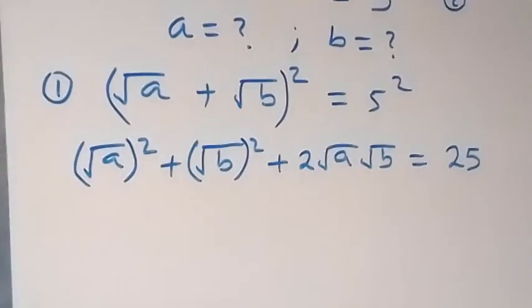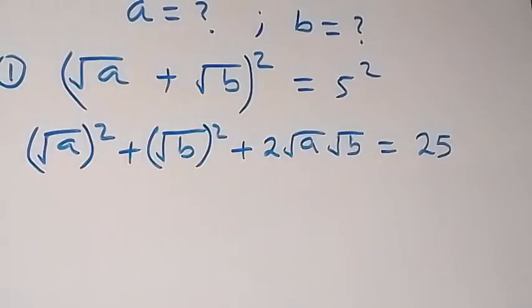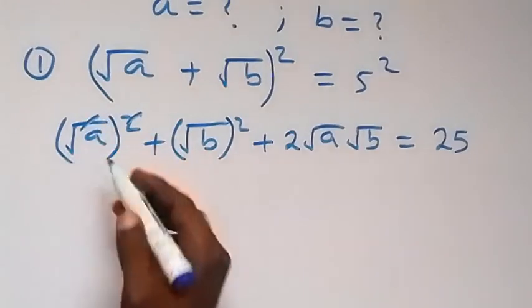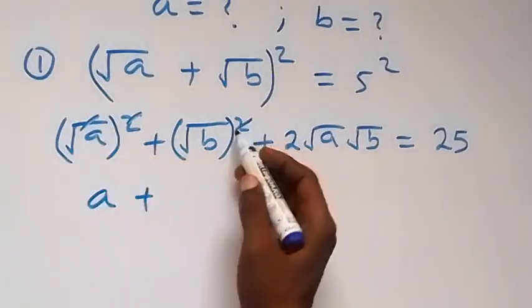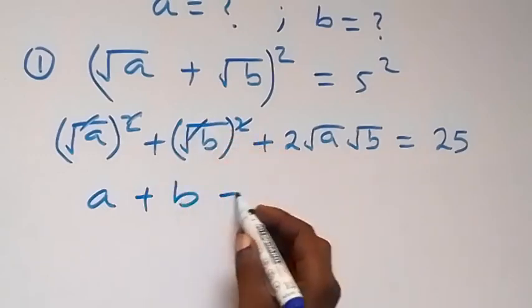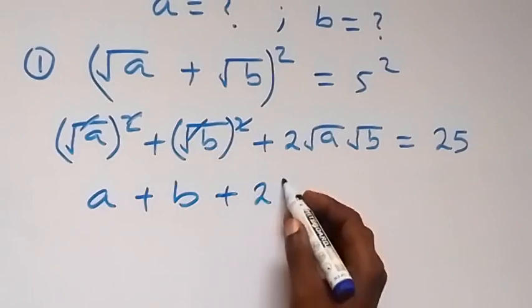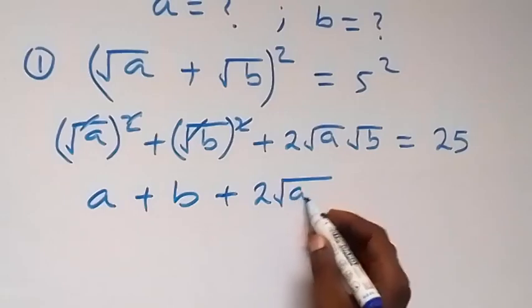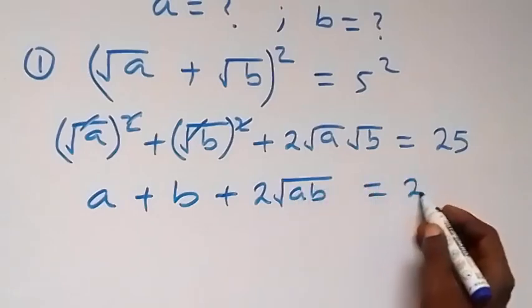Next, the square cancels the square root here. We are left with A, then plus B — since square cancels square root — then plus 2 times root AB, which equals 25.